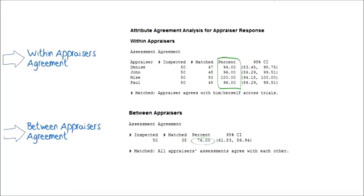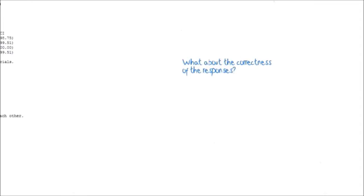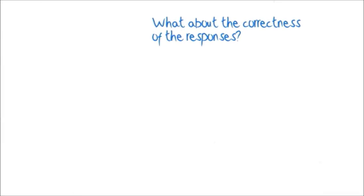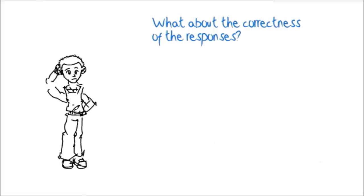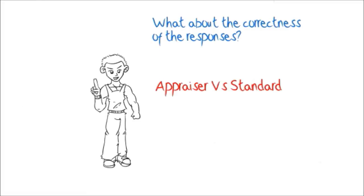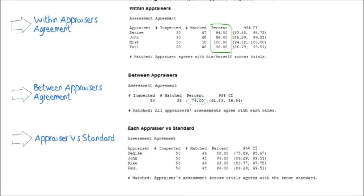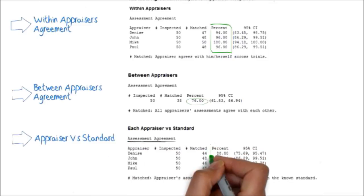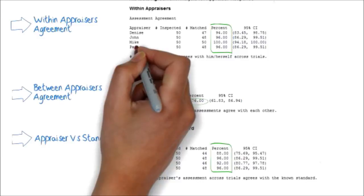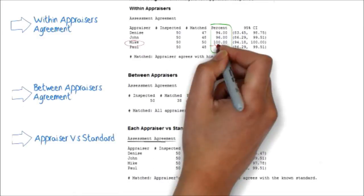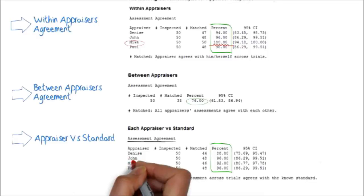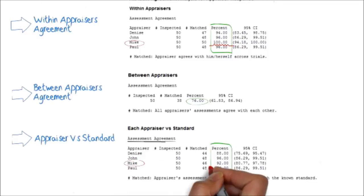So far we have seen that thanks to the within and between appraisers agreement, we can learn if the responses are consistent. But what about the correctness of the responses? Minitab can provide us with an assessment agreement for each appraiser versus the standard, showing how often each appraiser classified the items correctly. Looking at the output, we can see the percentage of the time each appraiser was correct. Let's take the example of Mike: in the within appraiser agreement, Mike classified all the requests with the same consistency during the two studies. However, he was correct only 92% of the time, which means that some requests were classified incorrectly.